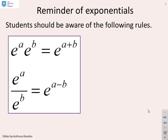A reminder of some rules of exponentials. If you multiply an exponential e to the a by an exponential e to the b, you get e to the a plus b. Similarly, if you divide two exponentials, e to the a divided by e to the b, you get e to the a minus b. So those are well-known rules.